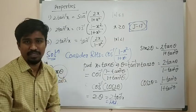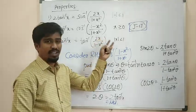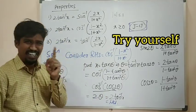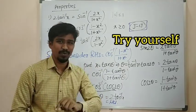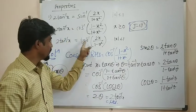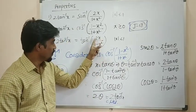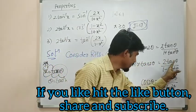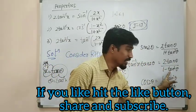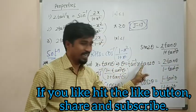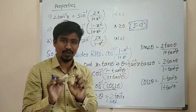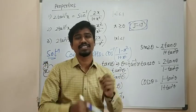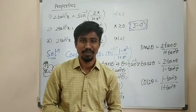The key point here: whenever you see these types of properties, put x equal to tan θ and θ equal to tan inverse x. For the third one, 2 tan θ divided by 1 minus tan squared θ relates to tan 2θ. You have to solve the problem and prove it similarly.